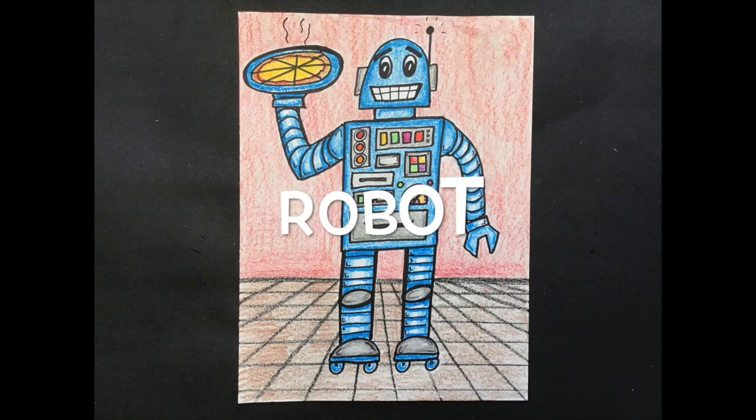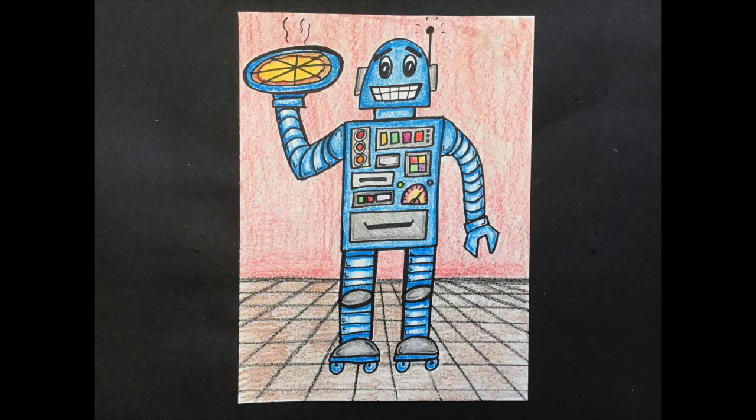Today in art, we're going to make a robot using lines and shapes that you know. This is my pizza robot, but you don't have to make a robot like mine. You know lots of different shapes, and you can use any of them to make your robot.